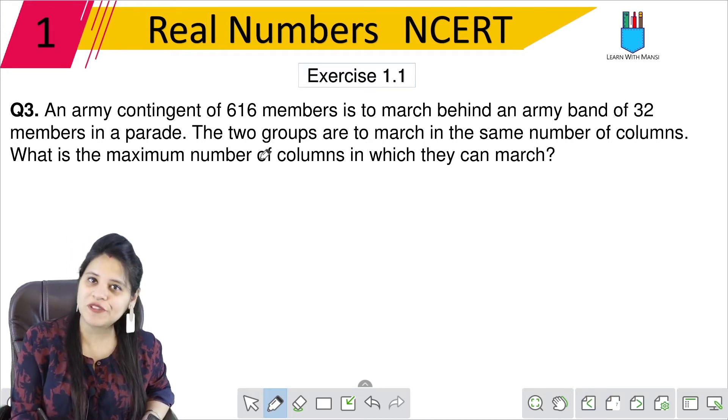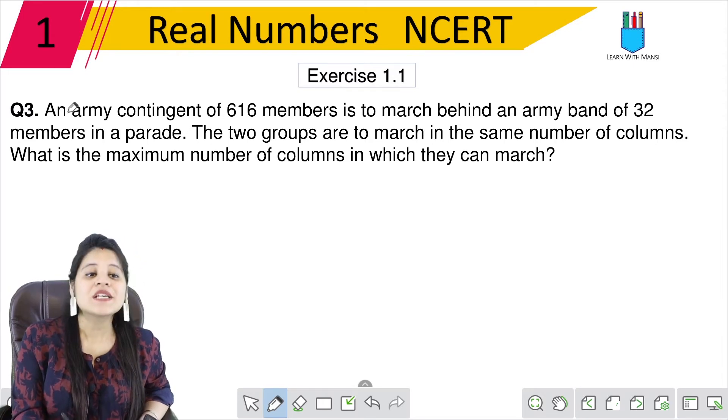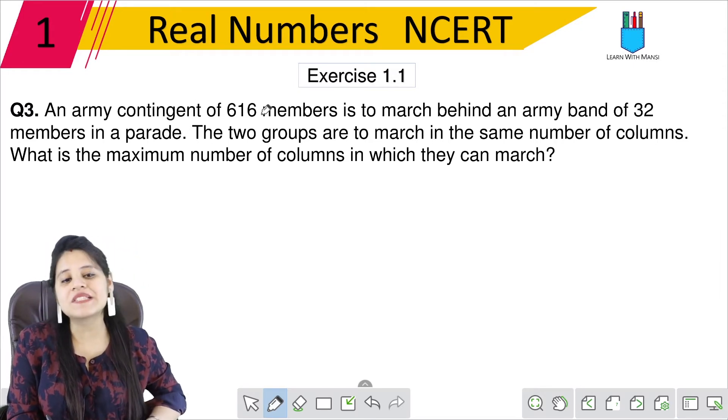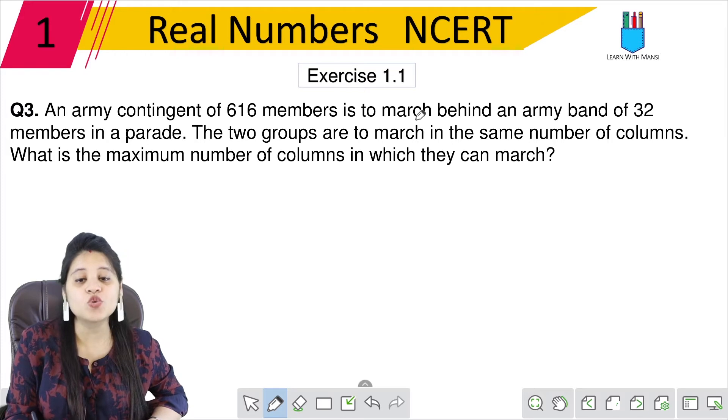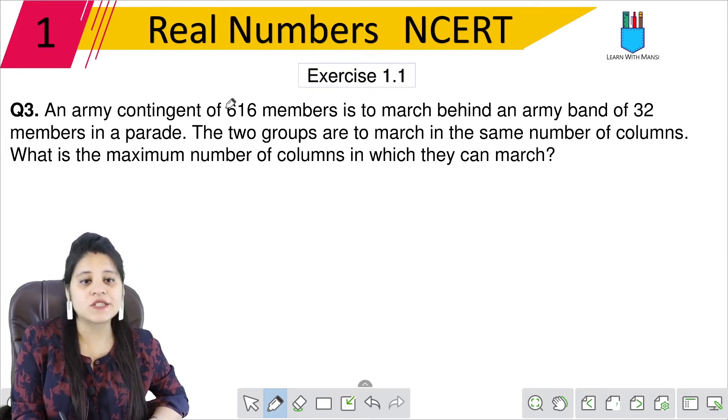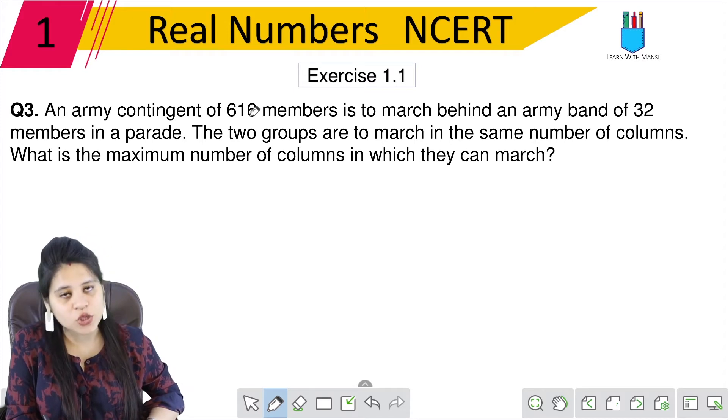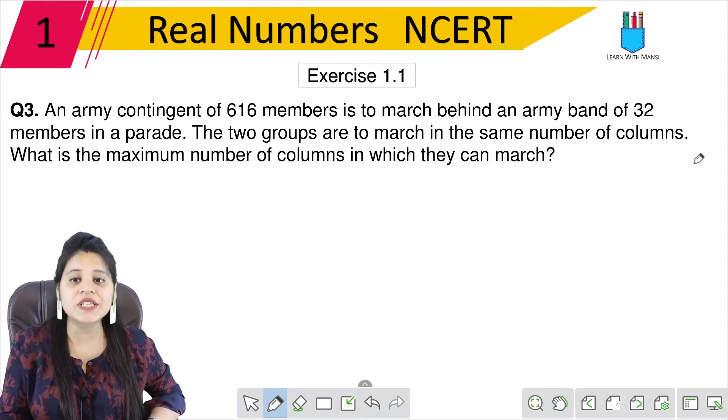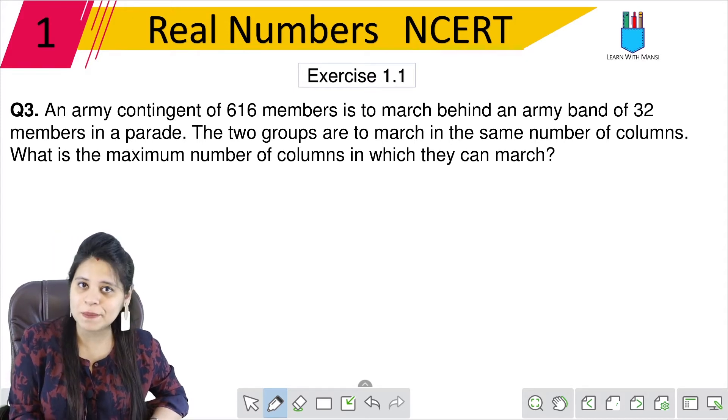So now we are going to start with question number 3 of exercise 1.1. An army contingent of 616 members is to march behind an army band of 32 members in a parade. So an army is 616 people who have to march behind 32 members in a parade.